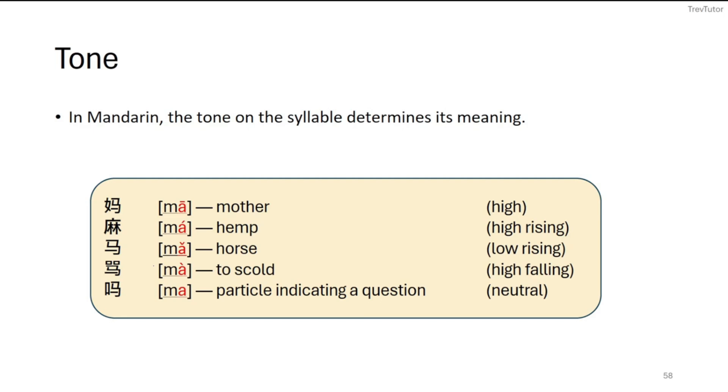So we have a high tone like ma, we have a rising tone that's high like ma, we have a low rising, so it goes down and up as in ma, we have a high falling one, so one that starts high that goes low, ma. And then we just have a neutral tone, ma, which would indicate a question.